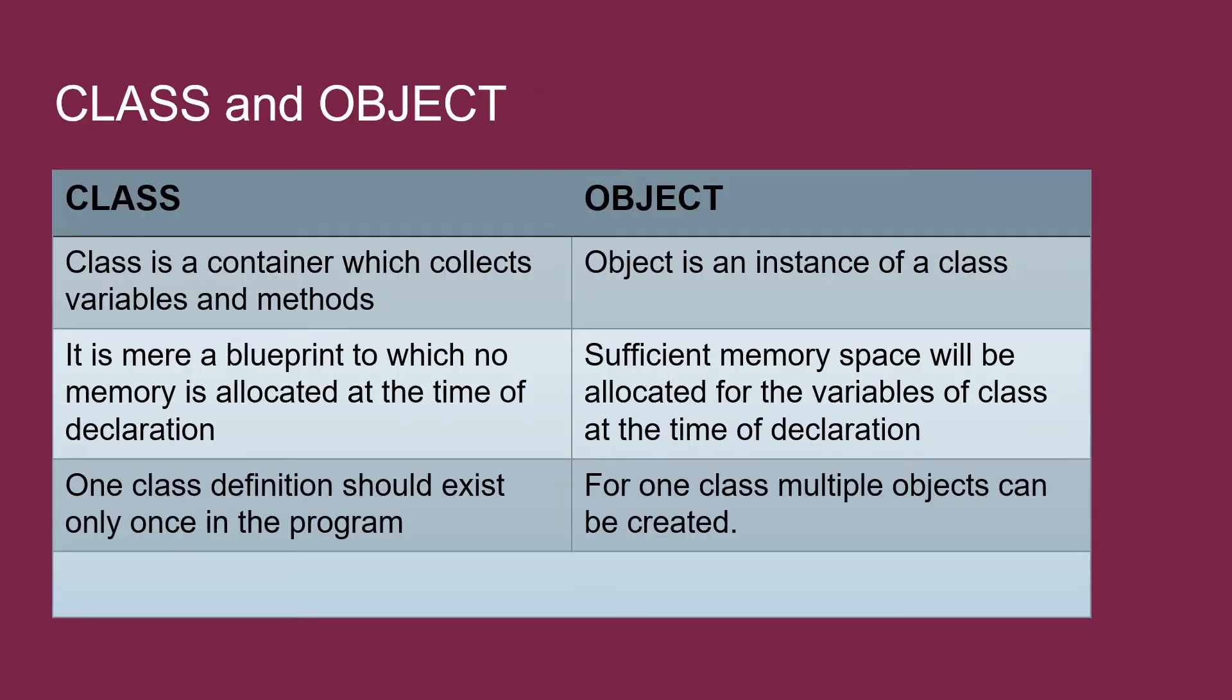Class is a container which collects variables and methods. Whereas, object is instance of class. Class is just a logical entity or a blueprint which takes no space in memory. Whereas, object is both logical and physical entity which takes memory at runtime.